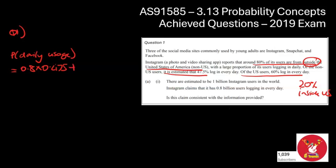We then add on the U.S. version. That's the remaining 20%, and that 20% has a 60% chance of logging in every day, so we have 0.6. By adding these together, we get the overall probability of daily usage. If you plug that into your calculator, you get 0.5.